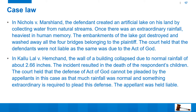Case laws for act of God: Nicholas versus Marshland — the defendant created an artificial lake on his land by collecting water from natural streams. Once there was an extraordinary rainfall — the heaviest in human memory. The embankment of the lake got destroyed and washed away all four bridges belonging to the plaintiff. The court held that the defendant was not liable as the same was due to act of God. Next, Kallu Lal versus Hemchand — the wall of a building collapsed due to normal rainfall of about 2.66 inches, resulting in the death of the respondent's children. The court held that the defense of act of God cannot be pleaded as 2.66 inches of rain is normal — something extraordinary is required to plead this defense, meaning the wall was simply weak.